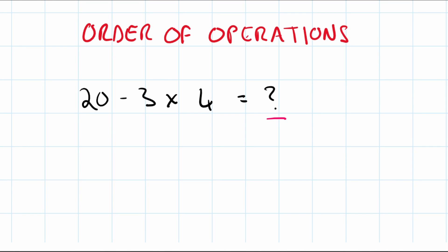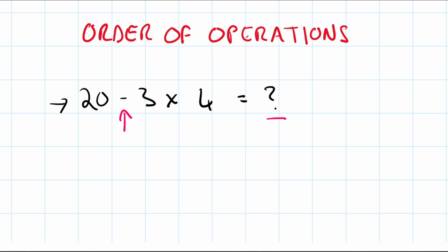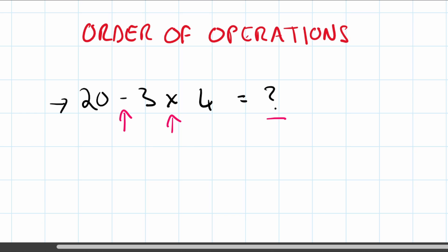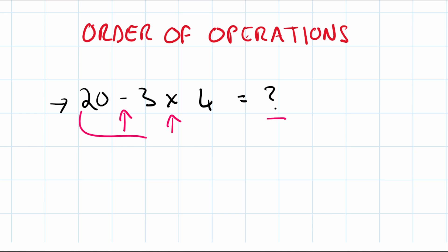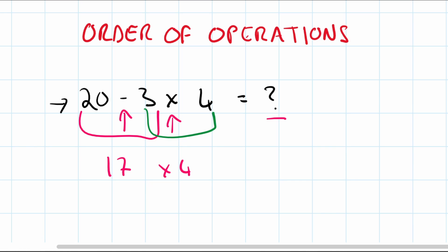Today we're looking at order of operations, and in maths it can become quite confusing when you have an equation with multiple operations. For example, with a minus and a multiply, the question is which one do we do first? If you do the subtraction first you get 17 multiplied by 4, but if you do the multiplication first you get 20 minus 12 — two very different answers.